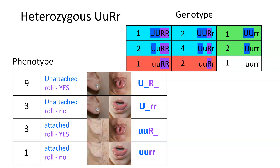At this point, when I do this in class, I ask everybody to tell me how many have an unattached earlobe and can roll their tongue, then how many have an unattached earlobe but cannot roll, then attached earlobe and can roll, and then attached earlobe and cannot roll. We take everybody and divide up by the number we got of each one, and we often see that it very closely resembles the 9-3-3-1 ratio, which is very common. So when dealing with a heterozygous UuRr cross where the traits are dominant, we get a 9-3-3-1 ratio. It's a very useful thing because you can do this in class — everybody has an earlobe, and everybody can figure out whether or not they can roll their tongue.